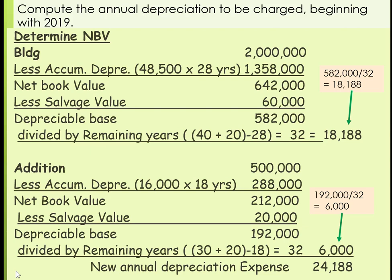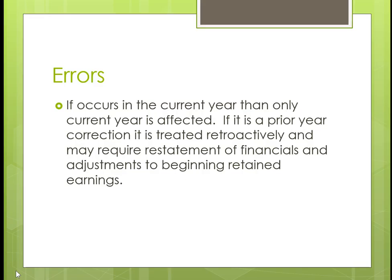Now let's look at what happens when you have errors. If the error occurs in the current year, only the current year is affected. If it is a prior year correction, it is treated retroactively — you have to go back and restate any financials used for comparisons. In most cases that's three years on financial statements, and you adjust beginning retained earnings. Let's look at examples for both.